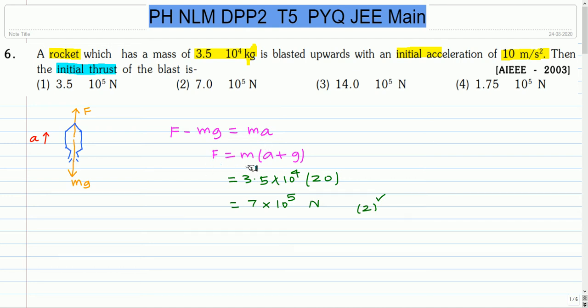So from this, the upward thrust is m times (a plus g), and the acceleration is 10 m per second squared. So from this, we get the upward thrust as 7 into 10 to the power 5 newtons. So the correct option is option 2.